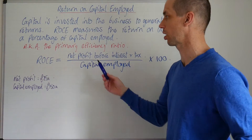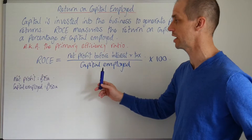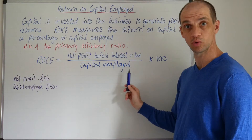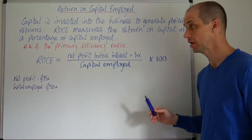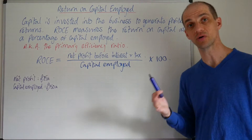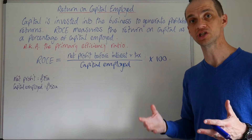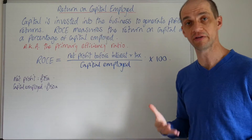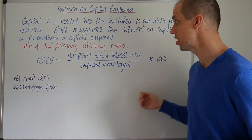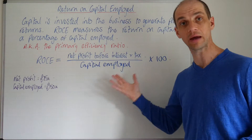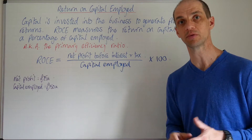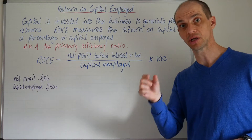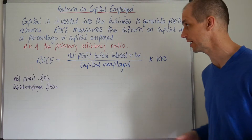Let's take a look at the calculation. ROCE equals the net profit before interest and tax divided by the capital employed, multiplied by 100. It's a nice straightforward ratio to apply. The net profit figure will come from the statement of comprehensive income, whereas your capital employed will come from your balance sheet or statement of financial position. It does require information from two separate pieces of financial accounts.